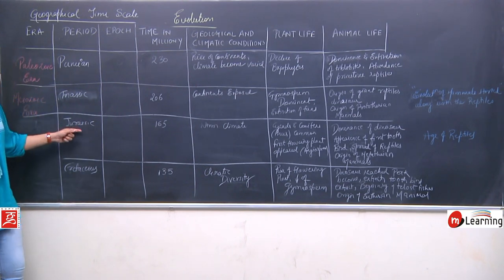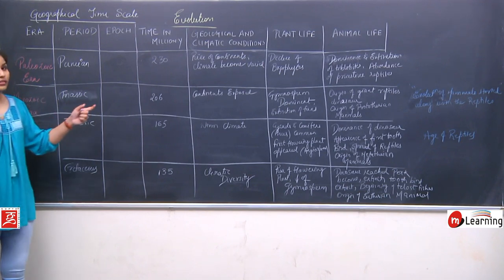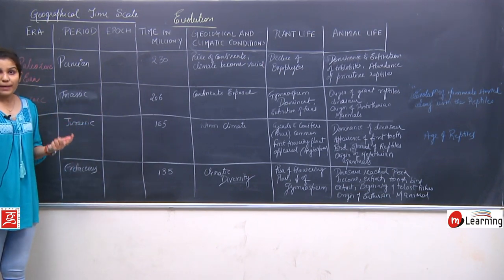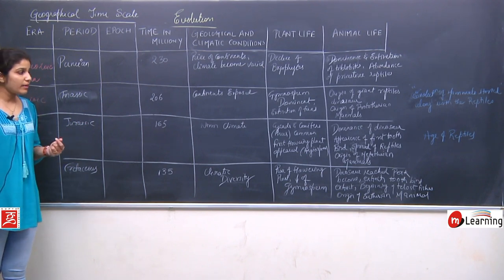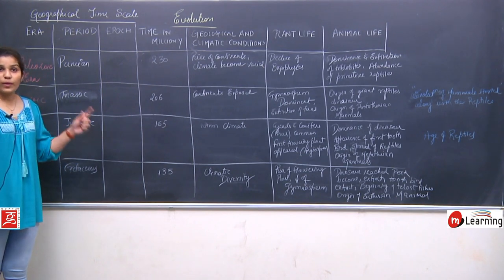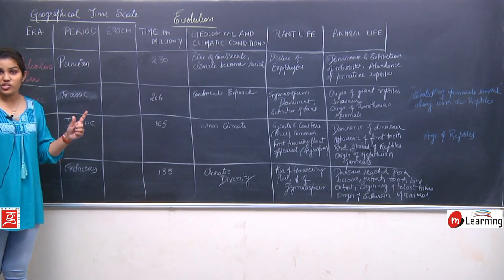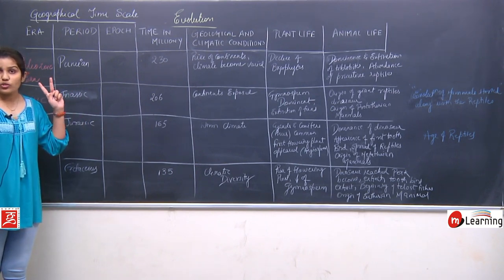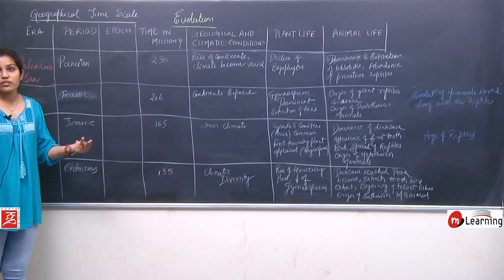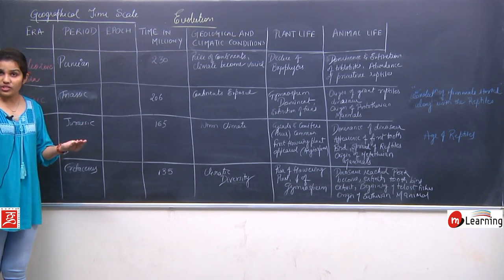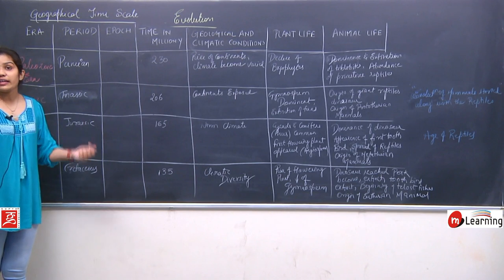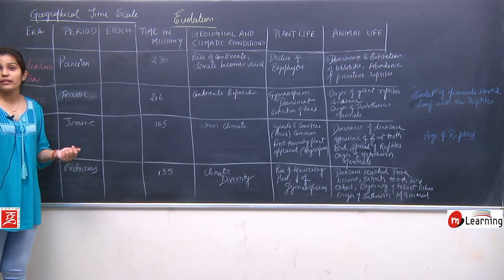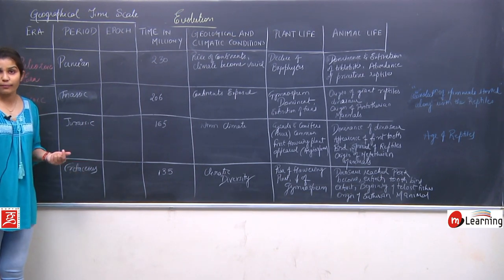Remember this period because it is the only period when the flowering plant was originated first. It is the only period when dinosaurs were dominant and there was diversification of the reptiles. The first toothed bird, Archaeopteryx, was originated, and Metatherian mammals were also originated in the Jurassic period.